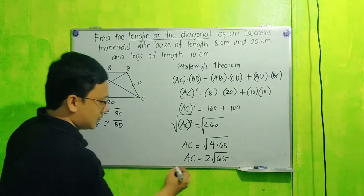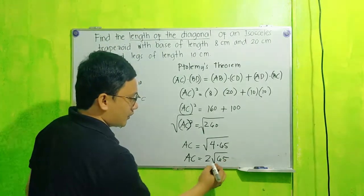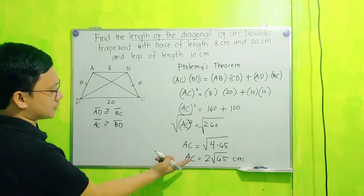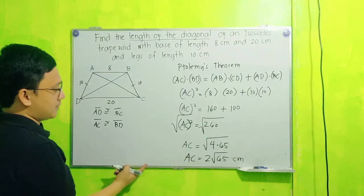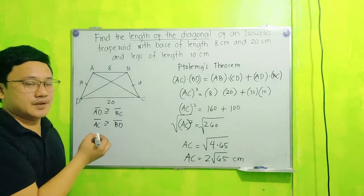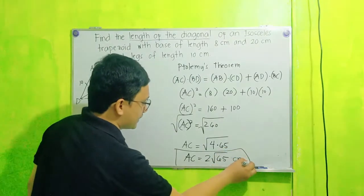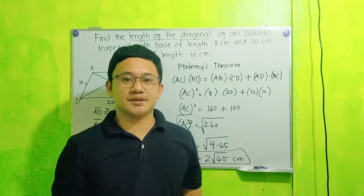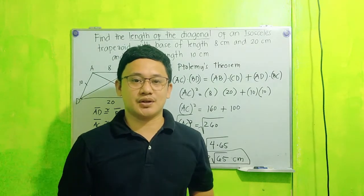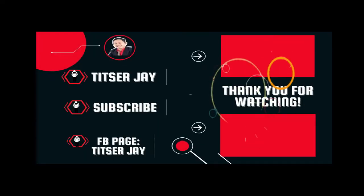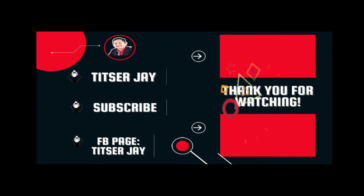Therefore AC now is 2 square root of 65 centimeters. So yung length ng ating AC that is 2 square root of 65 centimeters. Same with, kasi BD is equal to AC, so ito rin po ay 2 square root of 65. So this is now our final answer. Just in case you have questions or clarifications, you may type your questions po in our comment section. Keep safe and God bless.